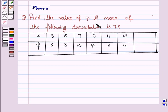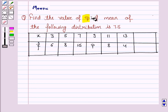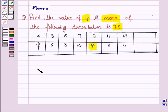Find the value of P if the mean of the following distribution is 7.5. We have to find the value of P if the mean of this distribution is 7.5, so let's move on to the solution.